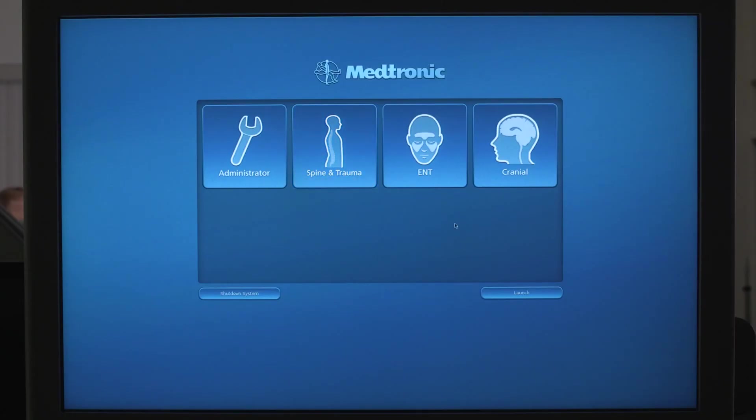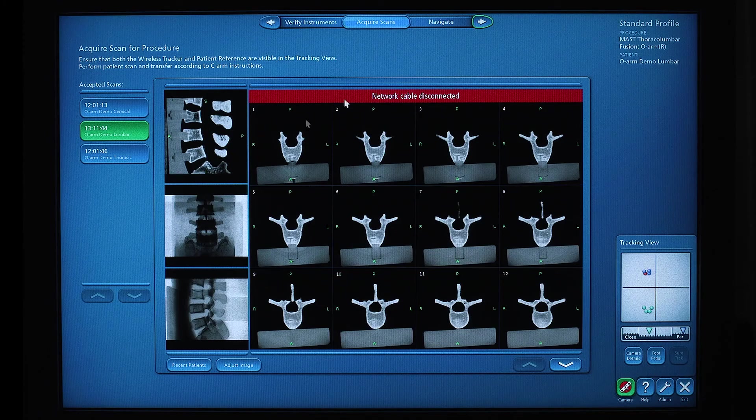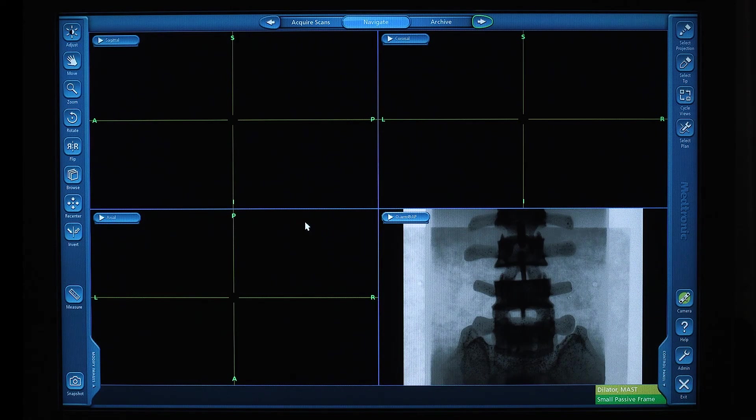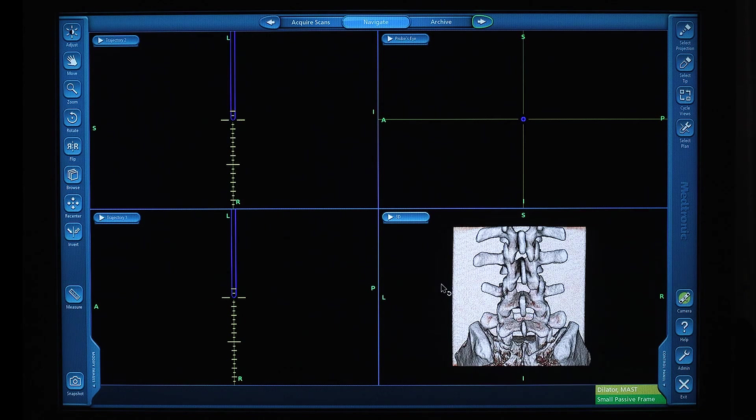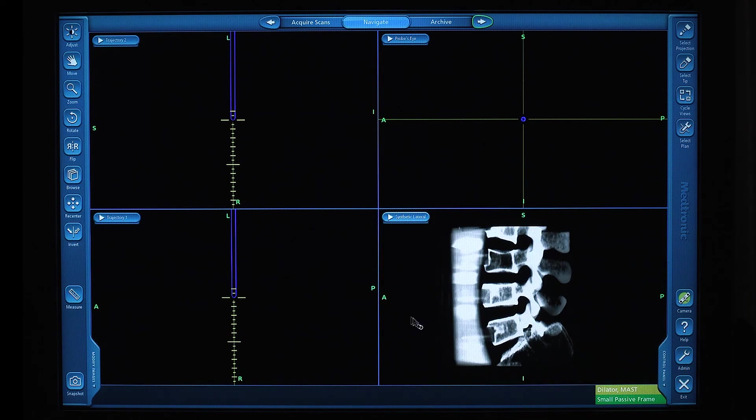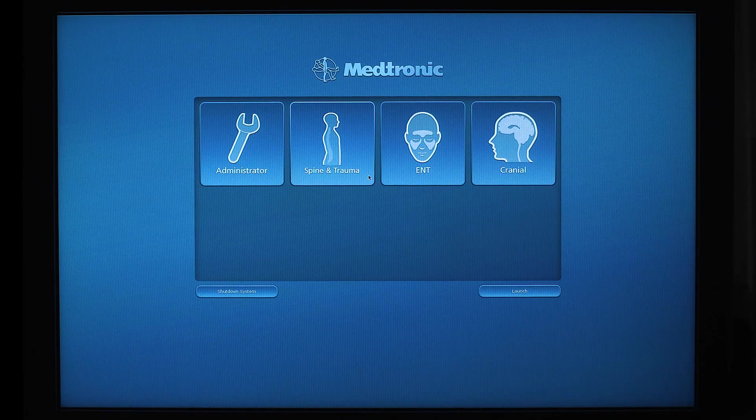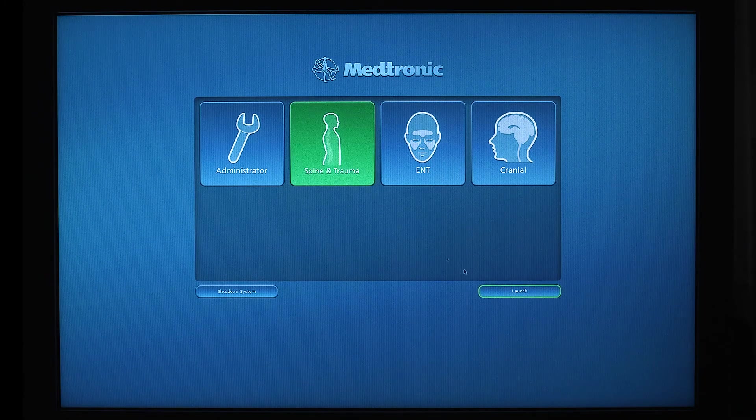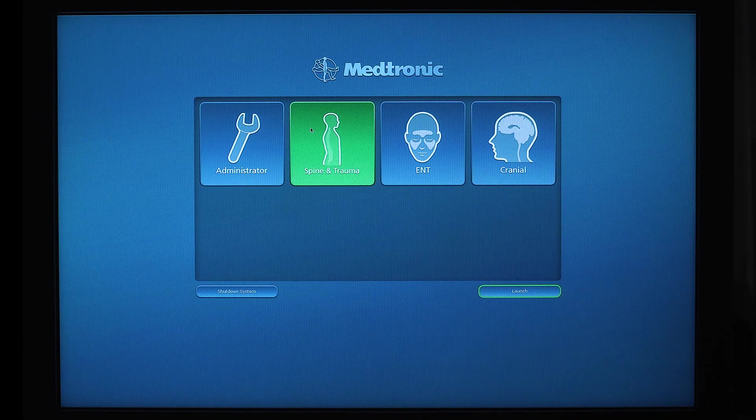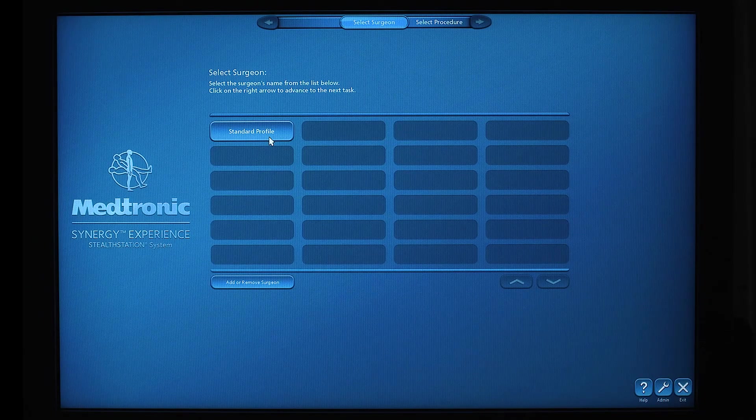I will now demonstrate the spine and trauma application. We're going to utilize a previously loaded exam. Once the exam is selected, we'll hit navigate. In this view, we're going to utilize trajectory one, trajectory two, a probe's eye view, and a synthetic lateral, which can be manipulated to accommodate the view or position of the patient anatomy on the field. We'll now launch into spine and trauma. Single click and launch, or you can double click the card. Once the application is launched, we'll go ahead and move into the standard profile. You can double click this to move forward.